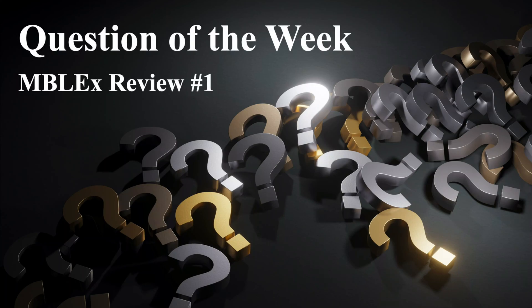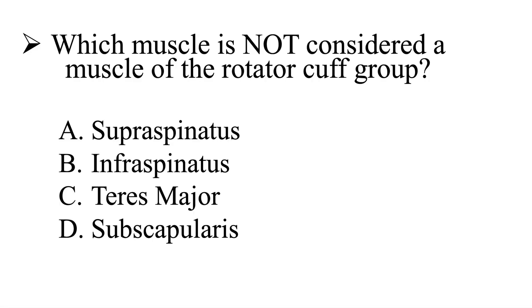All right, let's get started. This is our first Inblex review. The first question is: which muscle is not considered a muscle of the rotator cuff group? Is it going to be A, supraspinatus; B, infraspinatus; C, teres major; or D, subscapularis? Which one is not considered a muscle of the rotator cuff group? I'll give you a few moments, and then we'll go ahead and move over to the explanation.